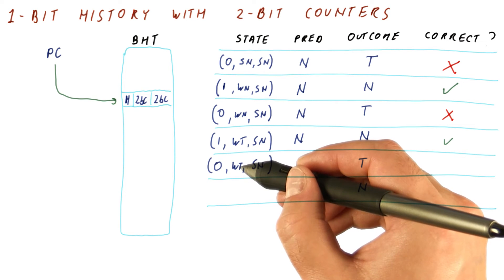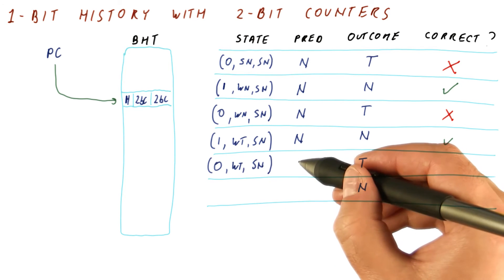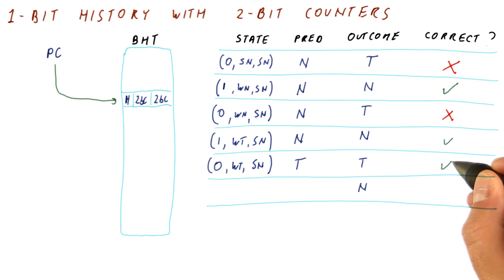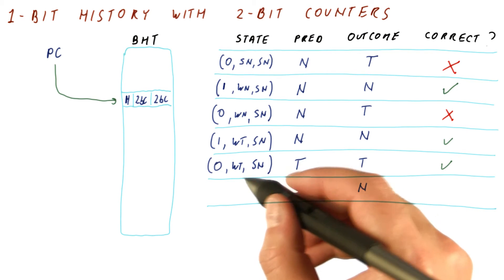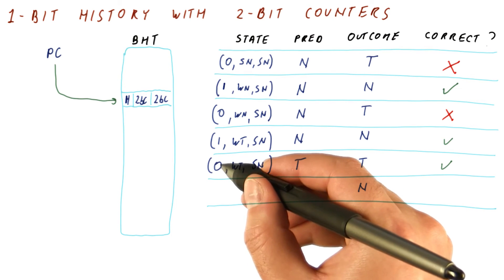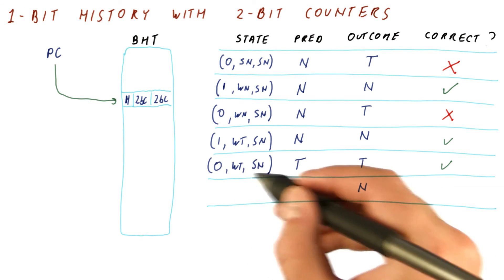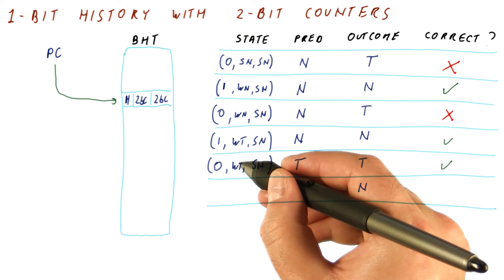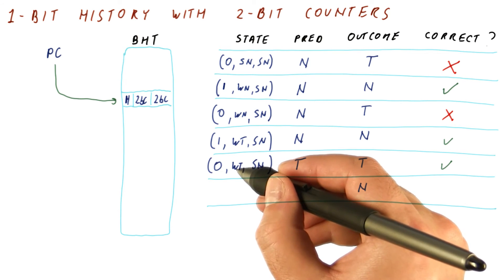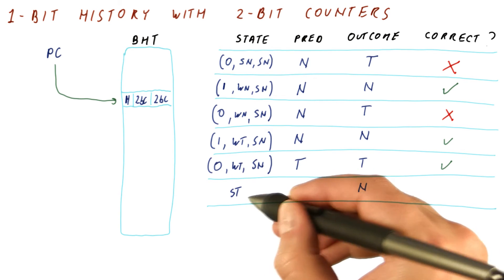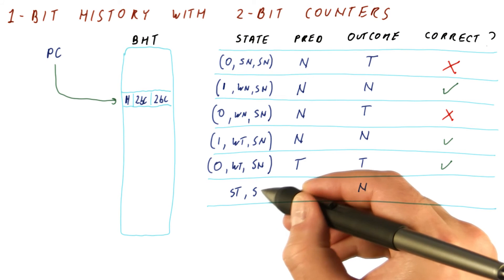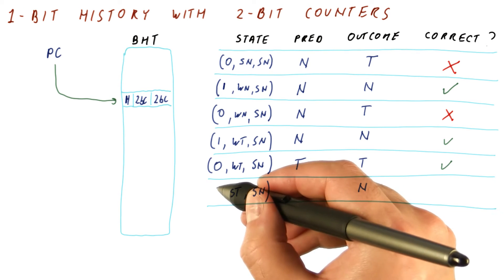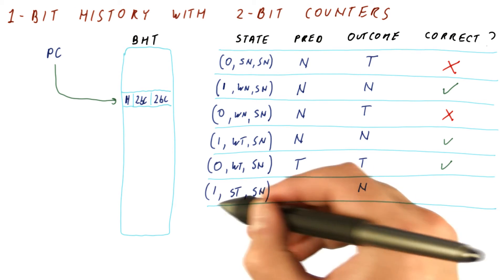Zero means we use this counter. This counter says weak taken, so we predict taken, and we predict correctly. We update the predictor by using zero to tell us which counter to update. Taken is used to update the counter, so from weak taken it becomes strong taken. The other counter stays the same, and the history shifts in a one.